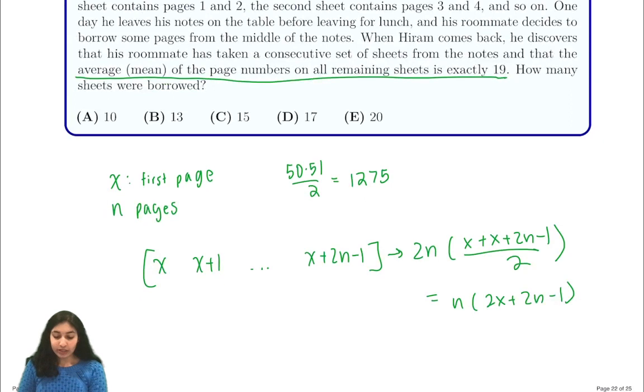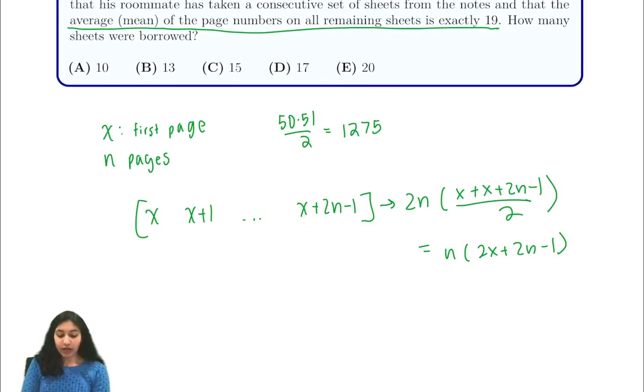So from here, we can use this to write our system of equations. We know that after our initial 1,275, the sum of the pages that have been removed is n times 2x plus 2n minus 1.